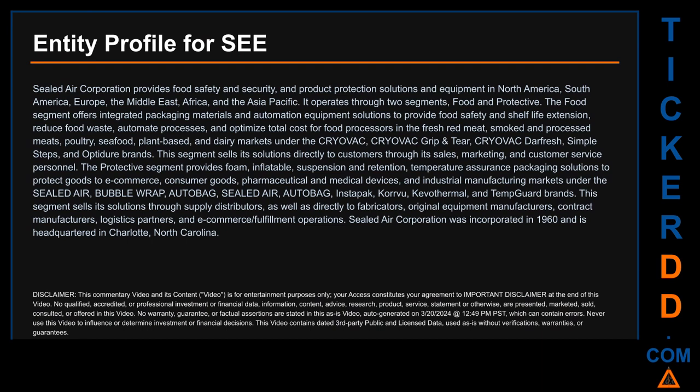It operates through two segments: Food and Protective. The Food segment offers integrated packaging materials and automation equipment solutions to provide food safety and shelf life extension, reduce food waste, automate processes, and optimize total cost for food processors in the fresh red meat, smoked and processed meats, poultry, seafood, plant-based, and dairy markets under the Cryovac, Cryovac Grip & Tear, Cryovac Darfresh, Simple Steps, and Optador brands. This segment sells its solutions directly to customers through its sales, marketing, and customer service personnel.